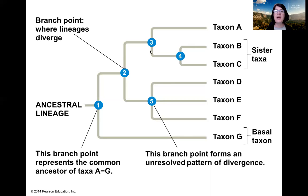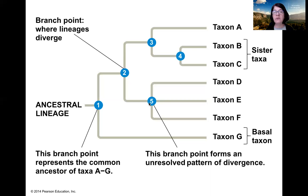As usual, remember we can flip the tree. We can write C and B as opposed to B and C — we can rotate around four, around three, around two, around five, around one. So we can flip the tree and this will not change the evolutionary relationship between the organisms.